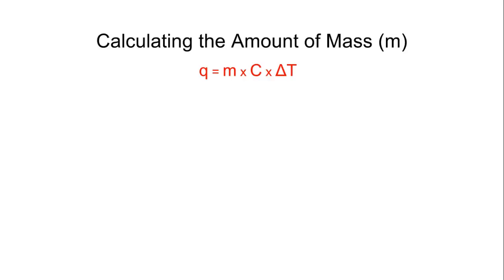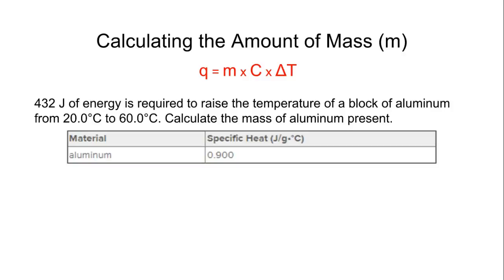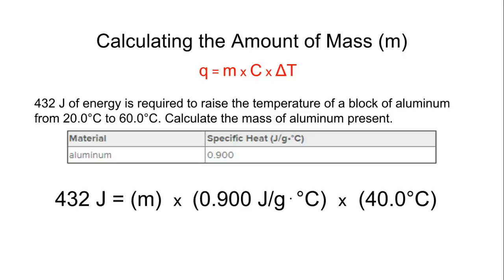We can also use this specific heat and this heat formula to calculate the amount of mass of something. Of course, we can calculate anything from this formula as long as we're given enough of the variables. So let's look. 432 joules of energy is required to raise the temperature of a block of aluminum from 20 degrees Celsius to 60 degrees Celsius. What we want to do is we want to calculate the mass of the aluminum present. So they give us the heat of 432 joules. They give us the specific heat of 0.900 joules per gram dot degrees Celsius. And our change in temperature is obviously 40 going from 20 to 60 degrees. So if we set this up, we end up having our heat formula set up just like that.